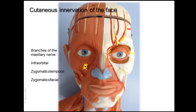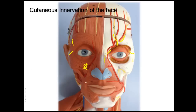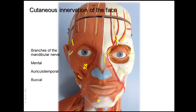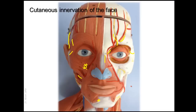The maxillary division of the trigeminal nerve supplies an infraorbital branch, located between levator labii superioris and levator anguli oris muscles, arising from the infraorbital foramen. There are also the zygomaticotemporal and zygomaticofacial nerves — all belonging to the maxillary division. The mandibular division has three branches: a buccal nerve, a mental nerve arising from the mental foramen, and the auriculotemporal nerve supplying the temple. The skin over the angle of the mandible is supplied by the great auricular nerve from the cervical plexus.